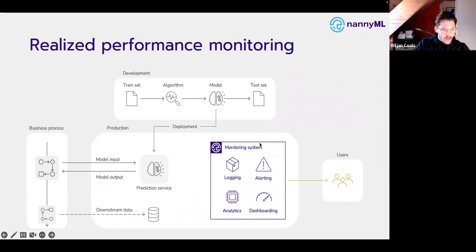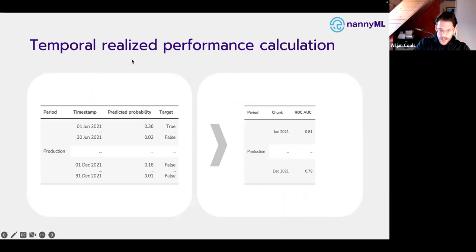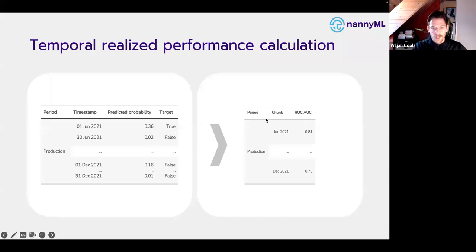For our monitoring system, the data we need to gather to measure realized performance is: the predictions coming out of the machine learning model, and then later downstream, the target. We put that in an NannyML performance calculator and get the performance. It's a temporal analysis — we're getting data over time and need to aggregate it. For instance, if we're making daily predictions and want to know performance per month, we aggregate all predicted probabilities in a month and compare with the targets to get a single metric value like ROC AUC for the entire month.